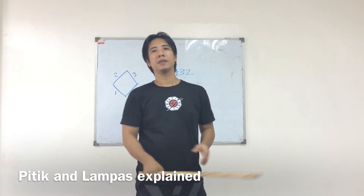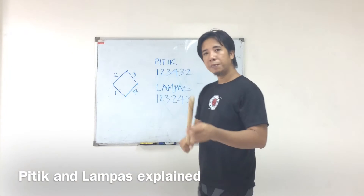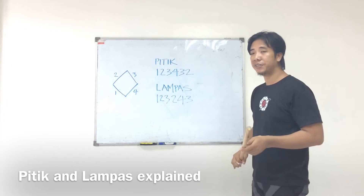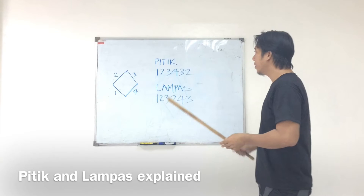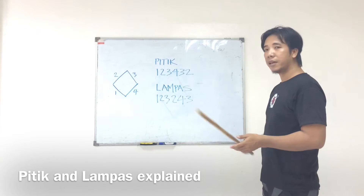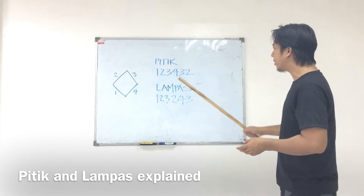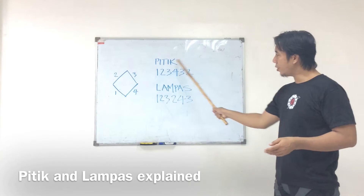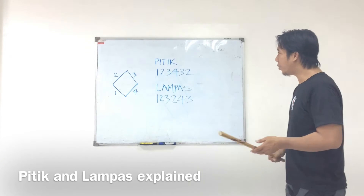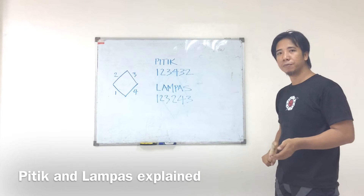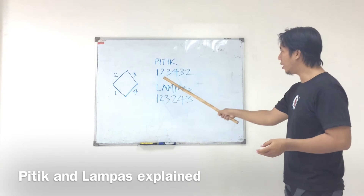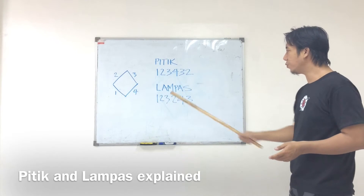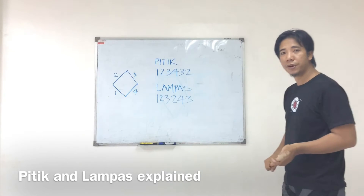Today I'll be explaining two types of strikes in our system: the pitik and the dampas. Later on you will understand what these numbers meant: 1 2 3 4 3 2, and 1 2 3 2 4 3.